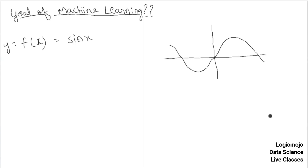This is the real formula, and we never get to know the real formula. We only get data, and it will be like these points with a little bit of noise. When data is generated in the real world, it's not perfect — there is always some noise. The goal of machine learning is to estimate the real formula. We can never find it exactly, but we can estimate it.